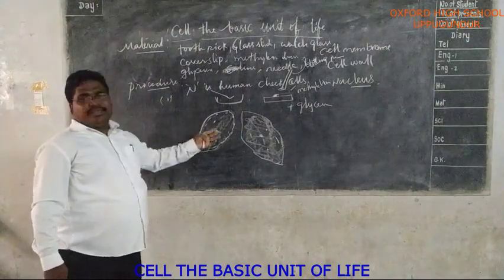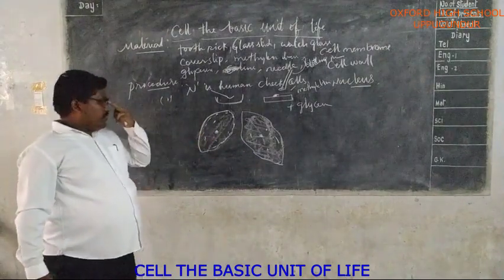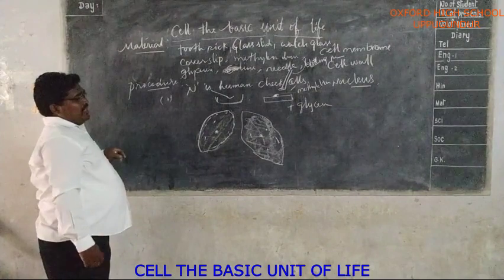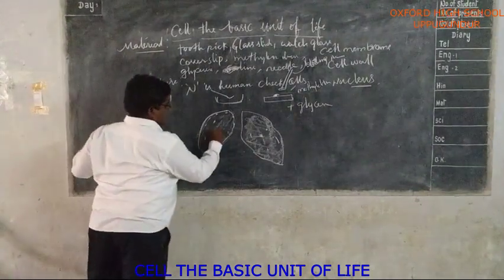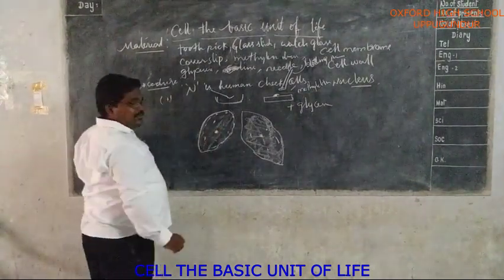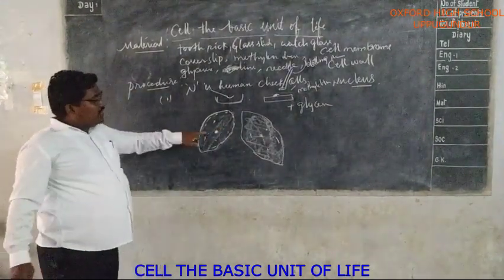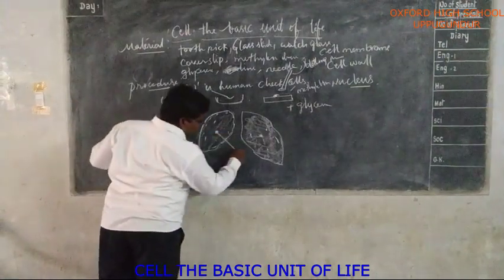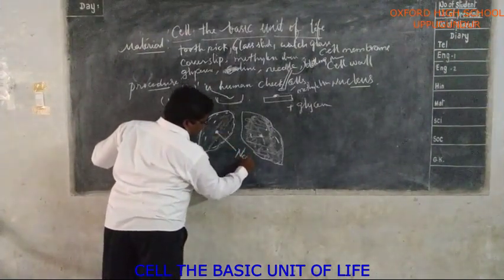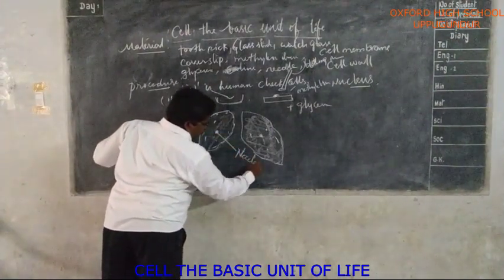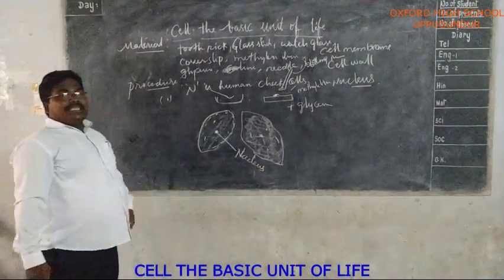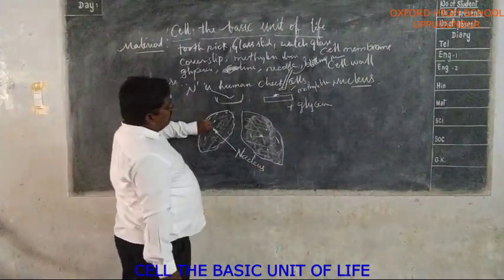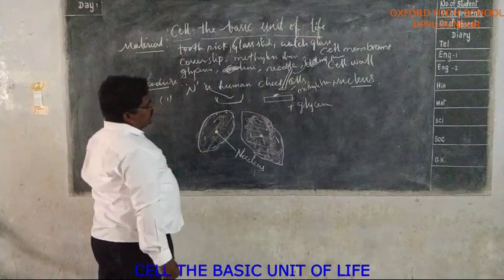When you observe this, the dark-stained structure present inside the cell is called the nucleus, and the cytoplasm is surrounding it.